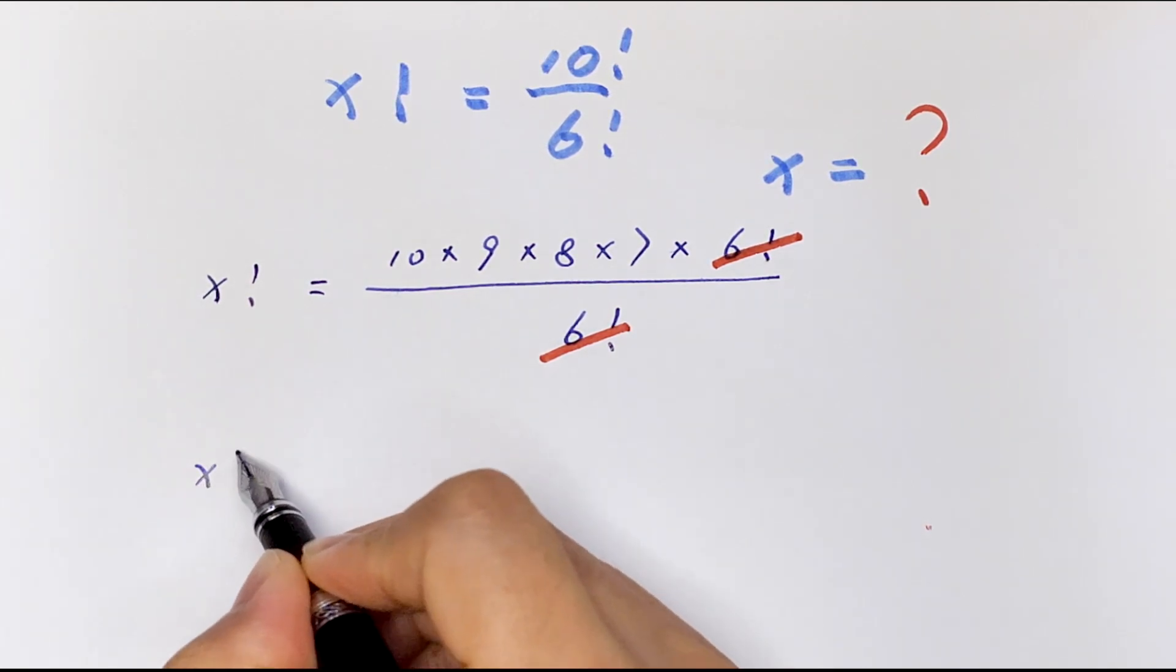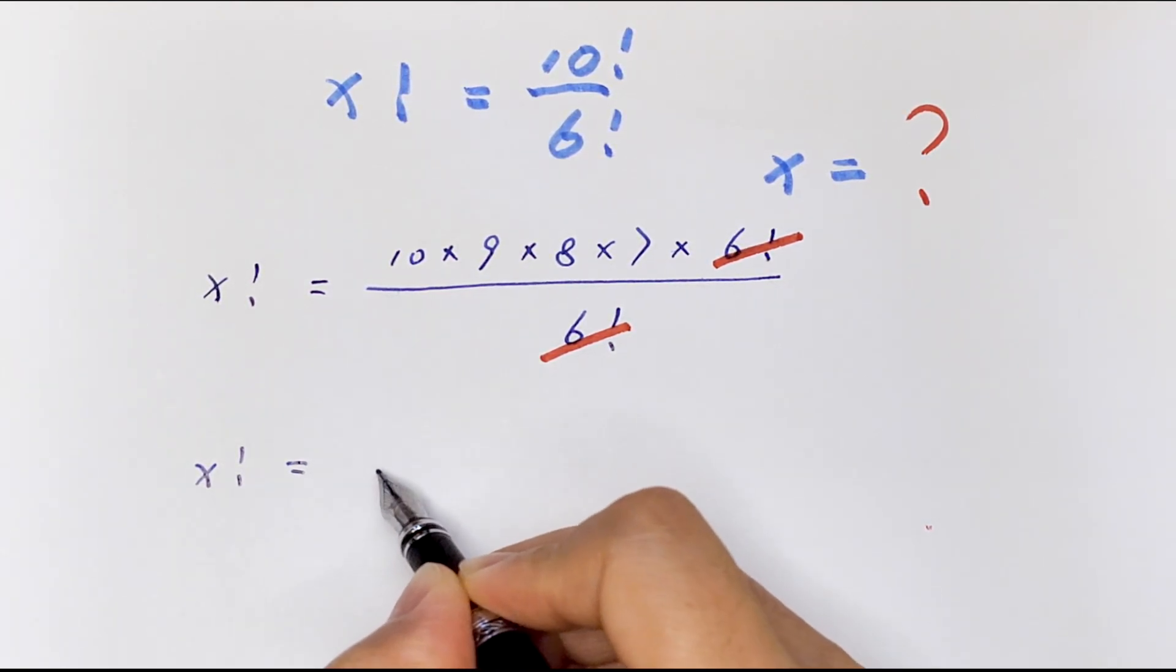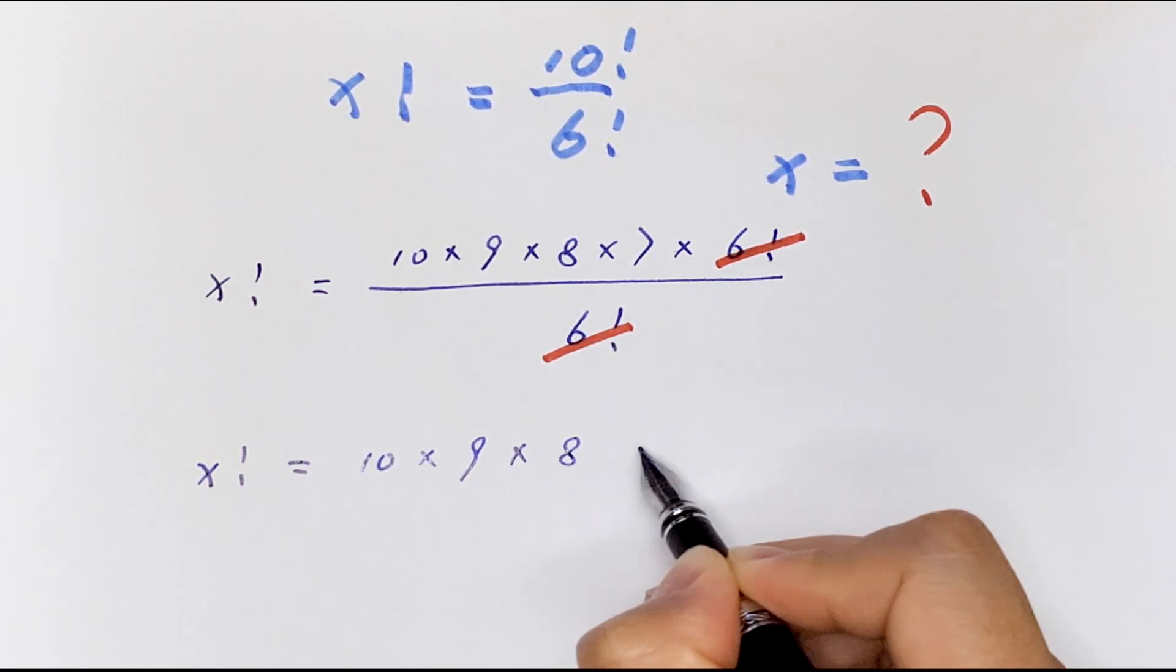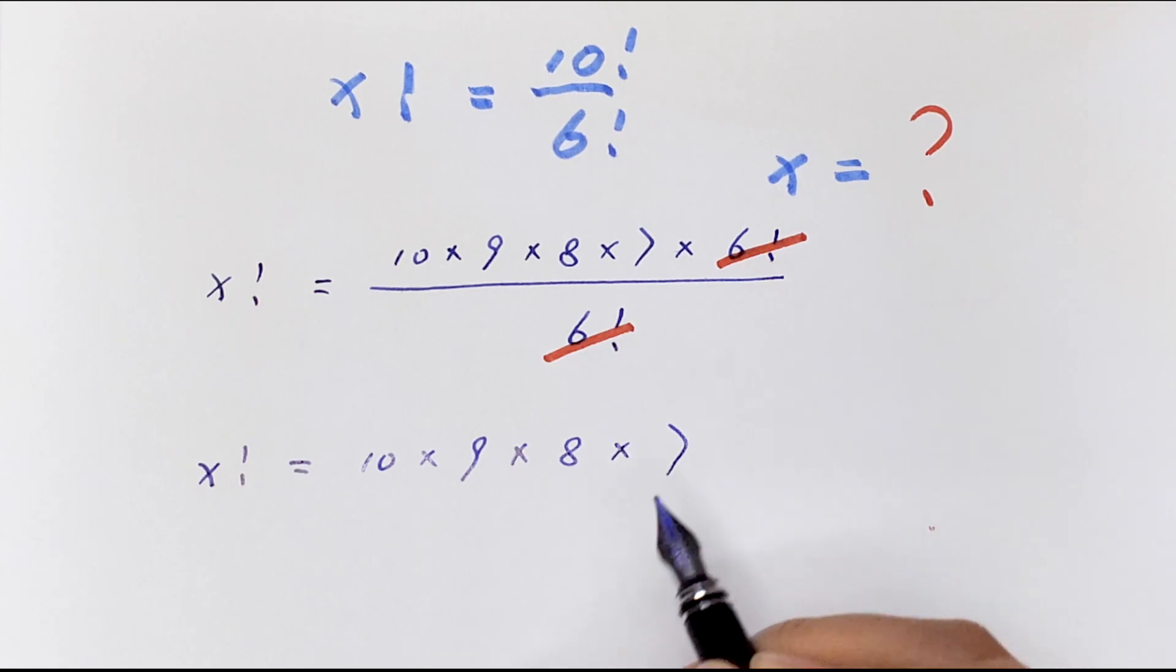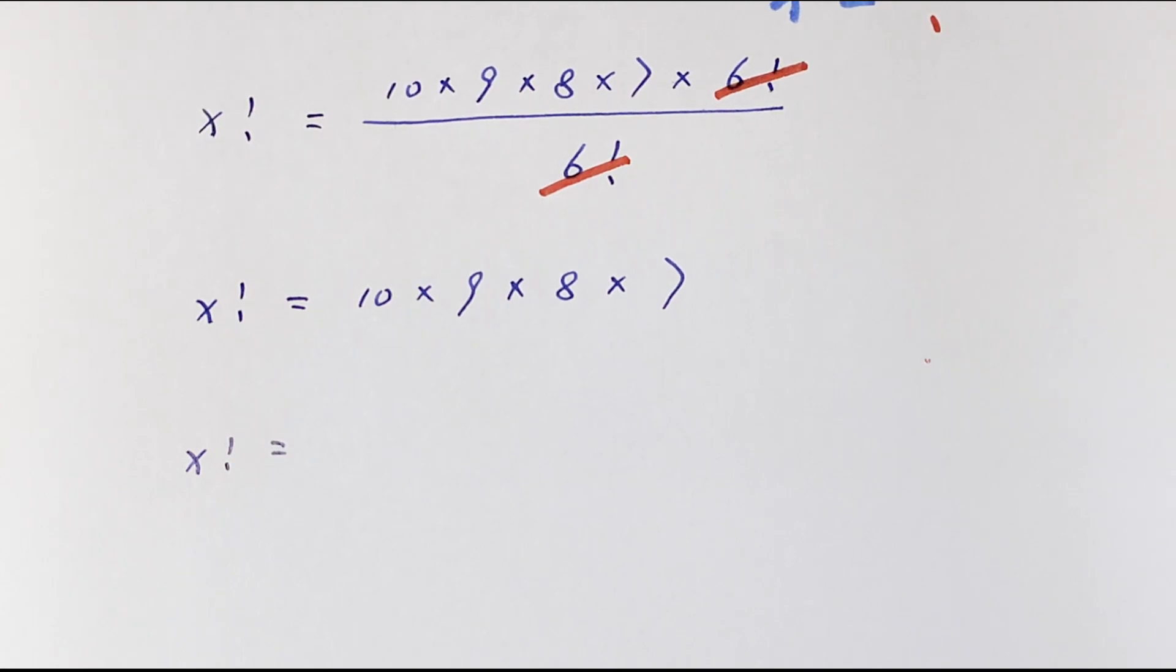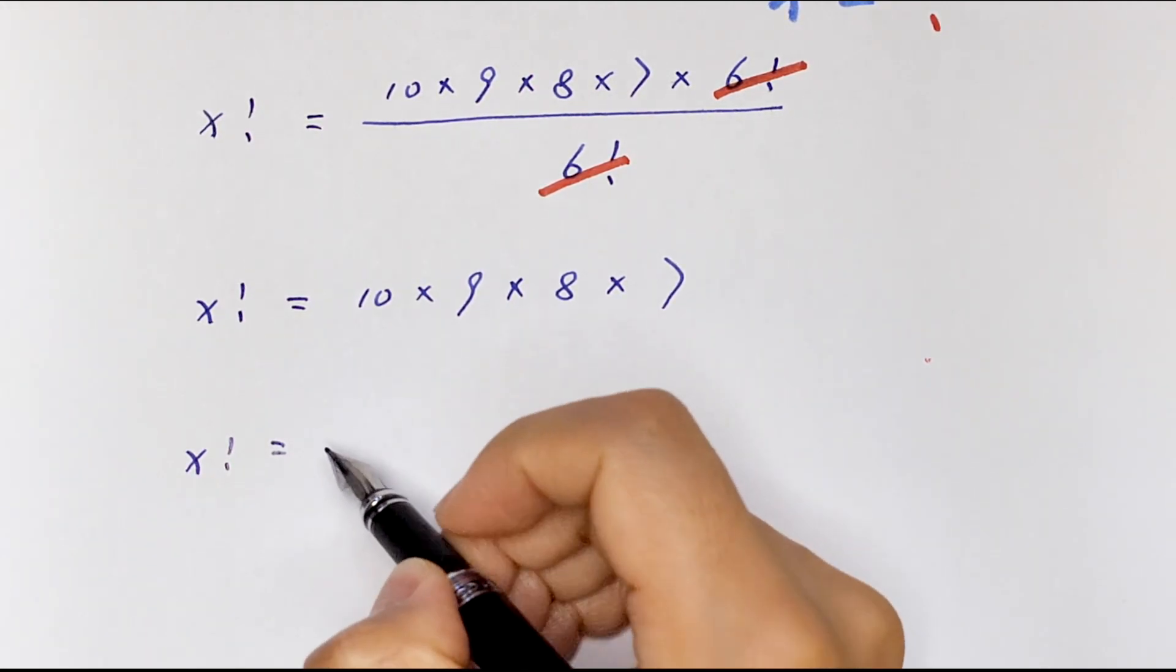So it will be x factorial is equal to 10 times 9 times 8 times 7.